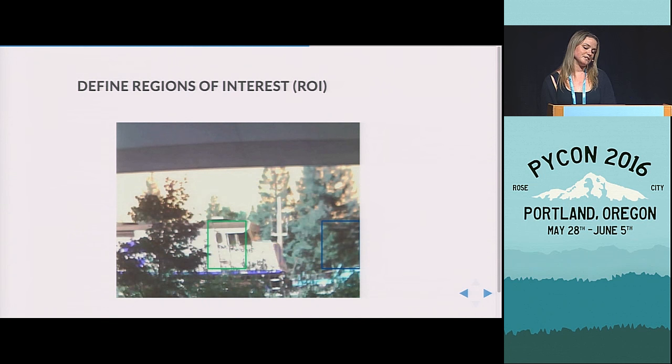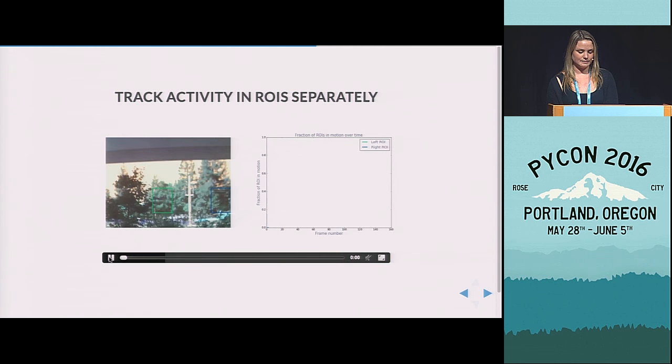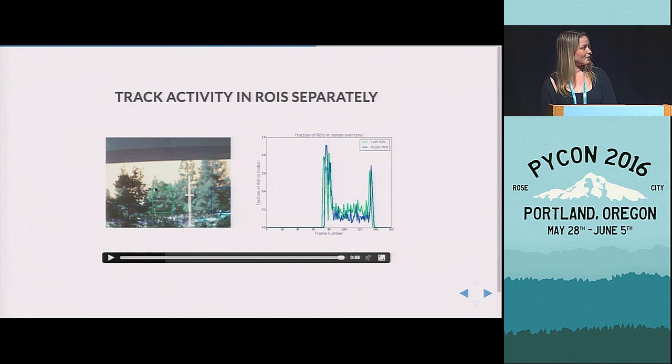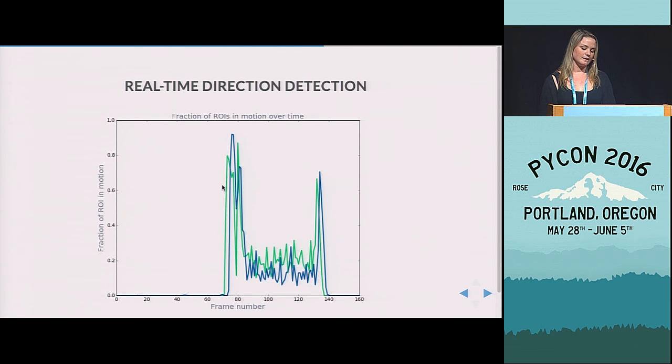So what we can actually do is instead of looking at the whole frame for motion, we can look at two regions of interest or ROIs and then monitor those separately and then see when one the train comes into before the other. So if we monitor the fraction of motion within each of these squares, then you see that the left side ROI picks up the train a couple of frames before the right.